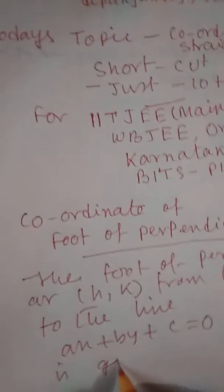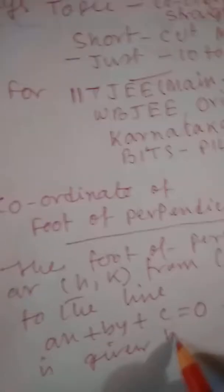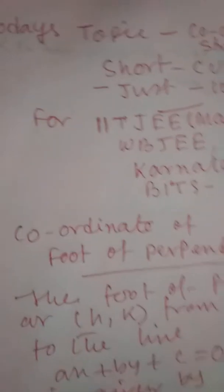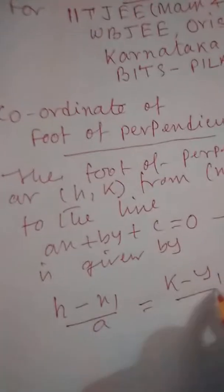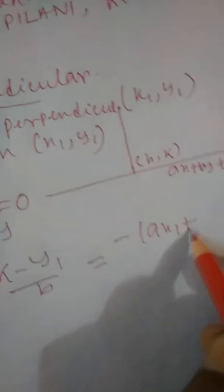This is given by the formula: (H − X₁) / A = (K − Y₁) / B = −(AX₁ + BY₁ + C) / (A² + B²).